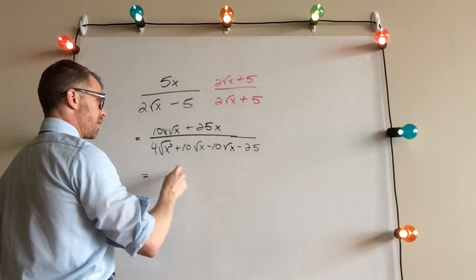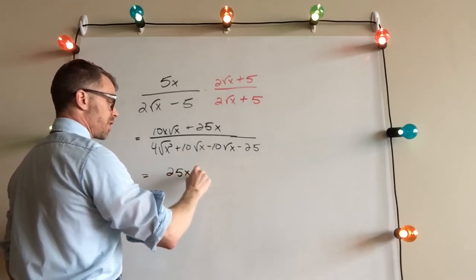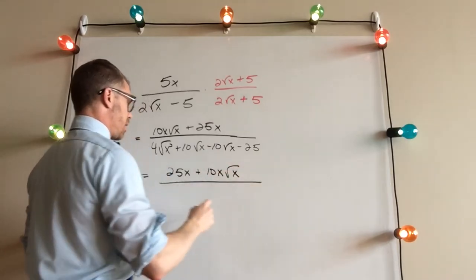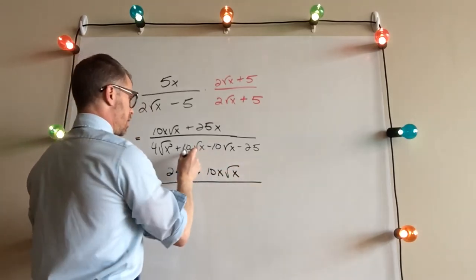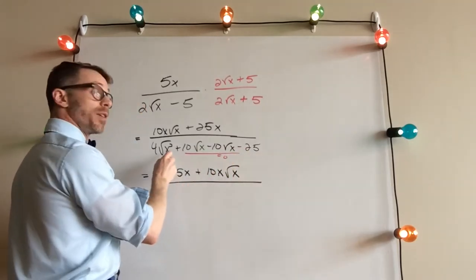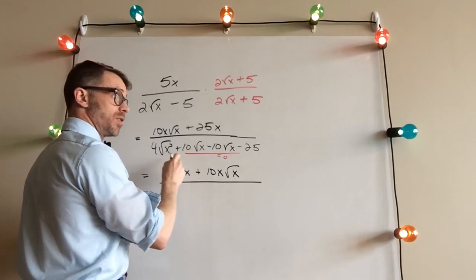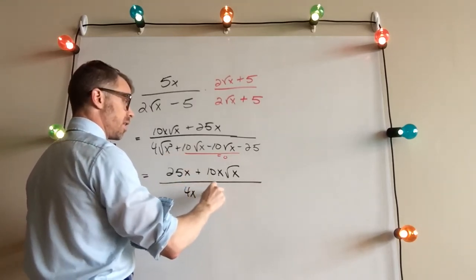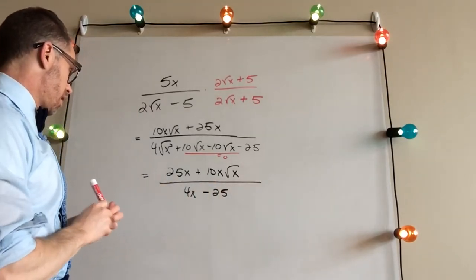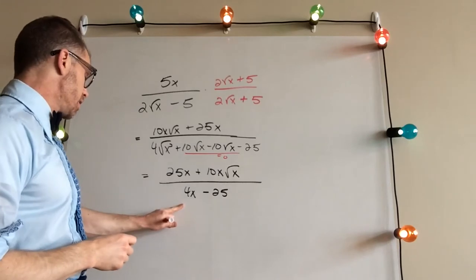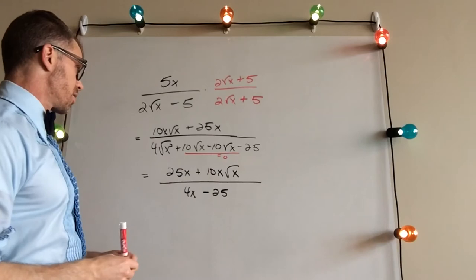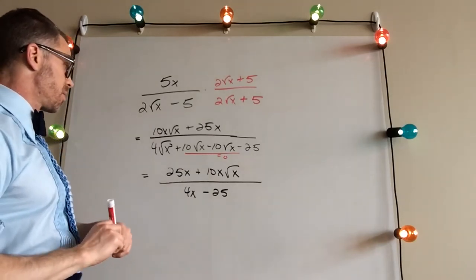Nothing we can do right now in the numerator. Down low, those two middle parts zero each other out. √(x²) is just x, so we have 4x minus 25 in the denominator. We can't combine the numerator terms with the denominator, and there's no factoring or simplifying we could do from here. So this is our answer.